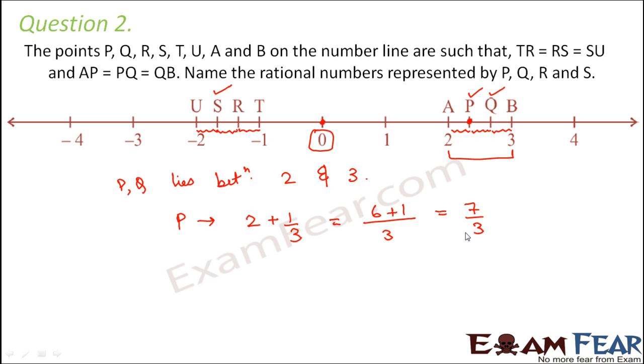So point P is 7 by 3. So another way of looking at it is, now since here we see that the section between 2 and 3 is divided into three equal parts, that means each of these sections between 1 to 2 is also divided into three equal parts, and 0 to 1 is also divided into three equal parts. So if you start numbering from here, you see it is 0. So this is one third because it is one part out of three equal parts. So this would be 2 third, this would be 3 by 3, this would be 4 by 3, this would be 5 by 3, this would be 6 by 3. So that means also point P is 7 by 3. What is point Q? Point Q is 8 by 3. What is point B? It is 9 by 3, which is 3.